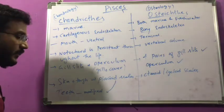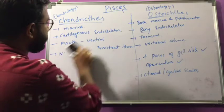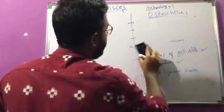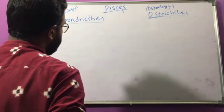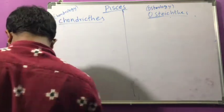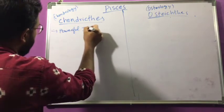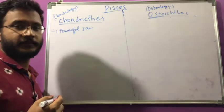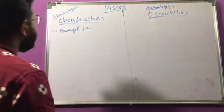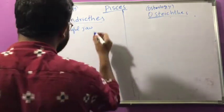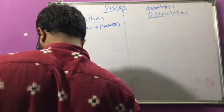These are some general characters differentiating the two classes. Chondrichthyes are having very powerful jaws. Even though the jaw is made up of cartilage, it is still powerful enough for predation, making these animals powerful predators.